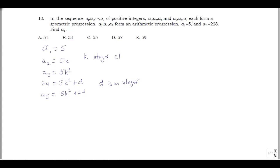And now once I have a5, a5, a6, a7, this is another geometric progression. So what I'm going to get, let's call this ratio t. Let's do t times 5k squared plus 2d. And then a7, I have to multiply by t again from a6. So really the ratio between a6 and a5 is the same as the ratio between a7 and a6. So I get t squared, 5k squared plus 2d. And this a7 is supposed to equal 228.